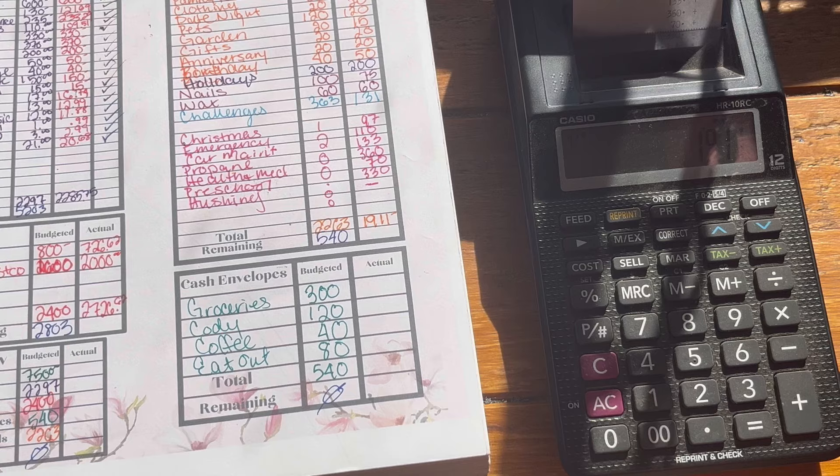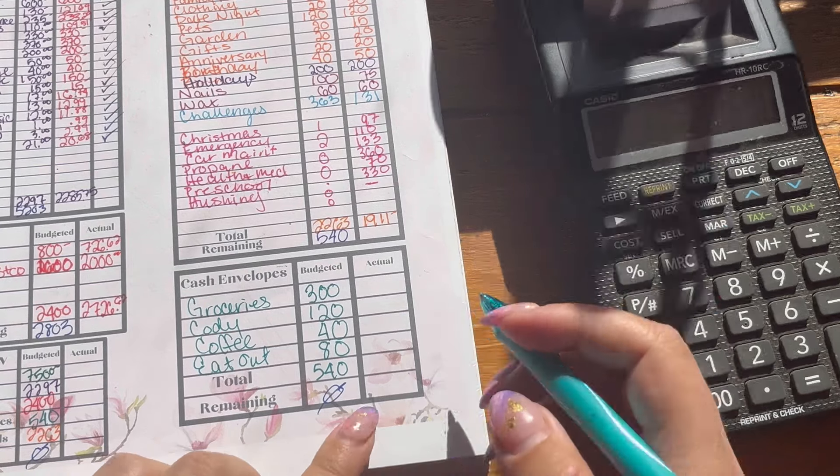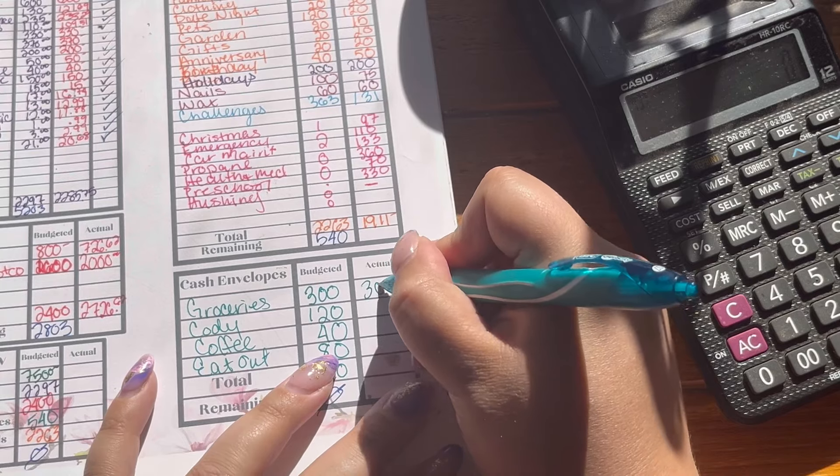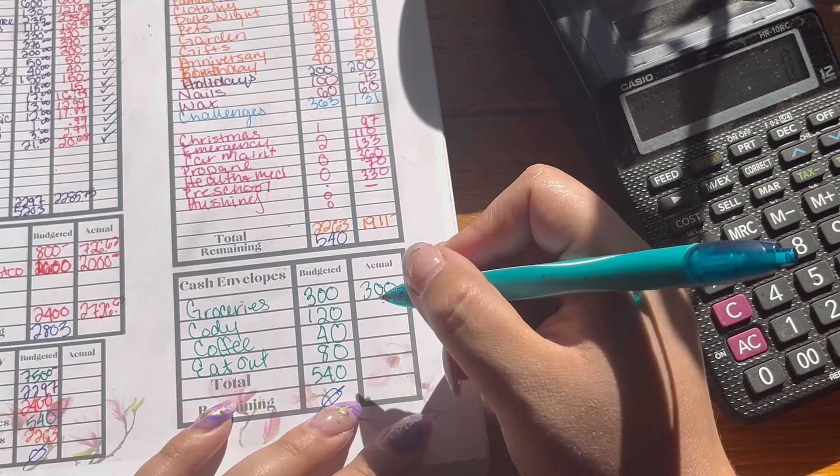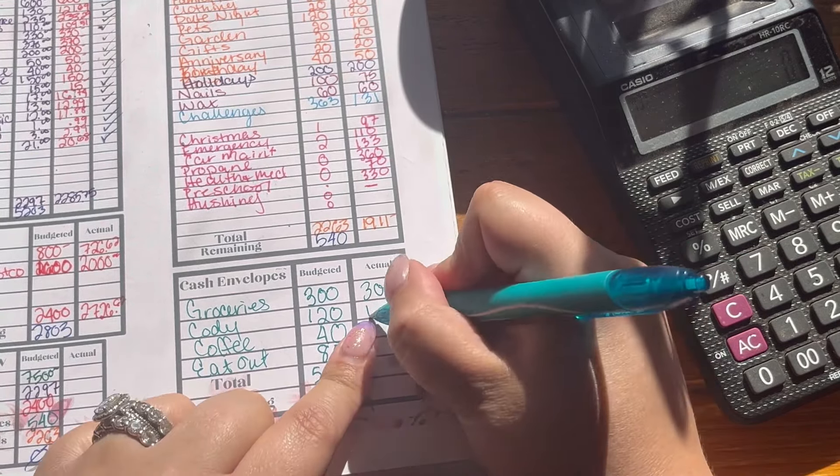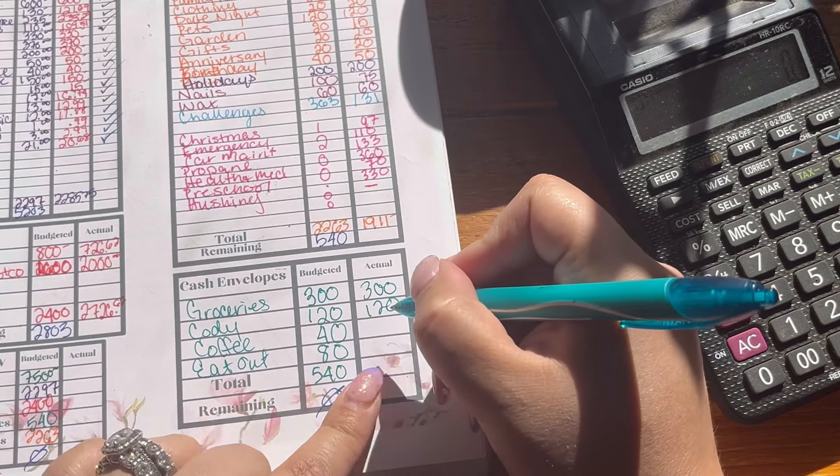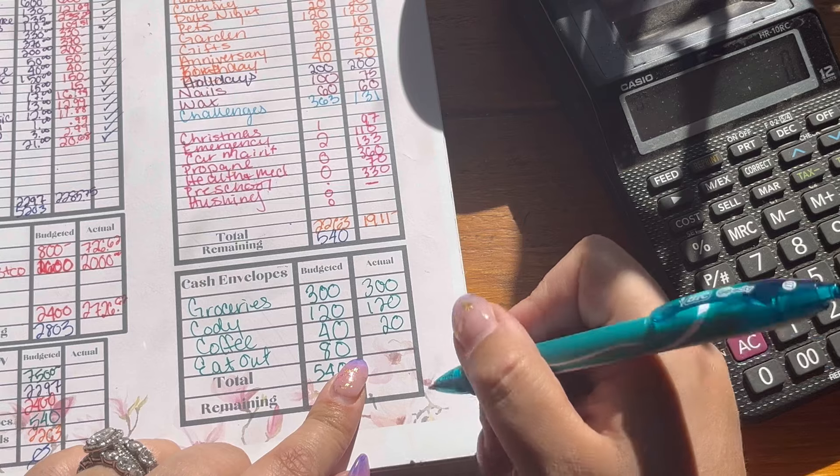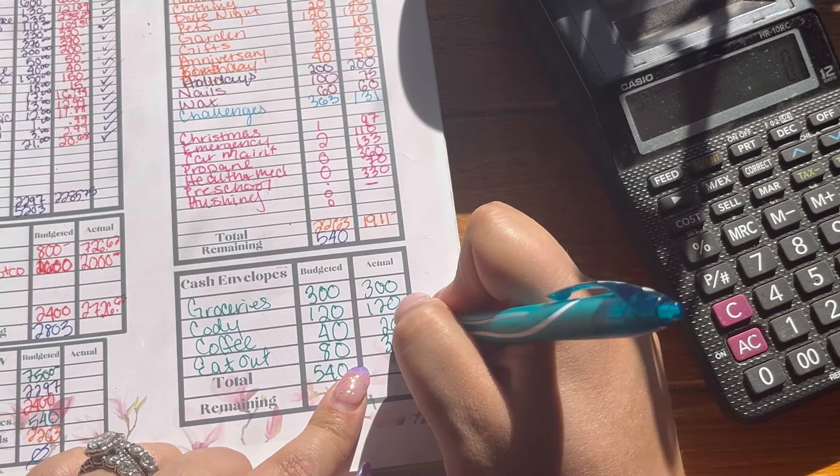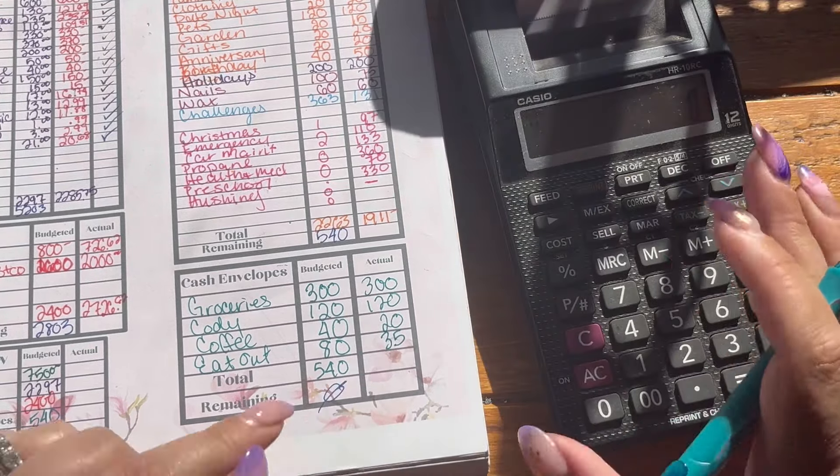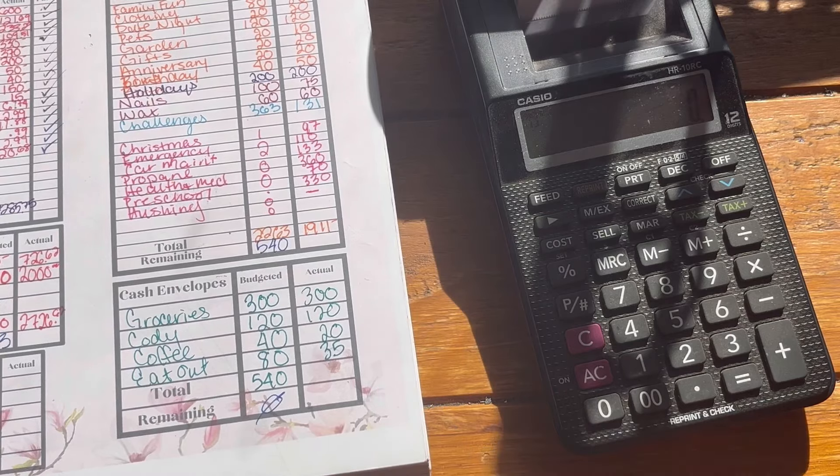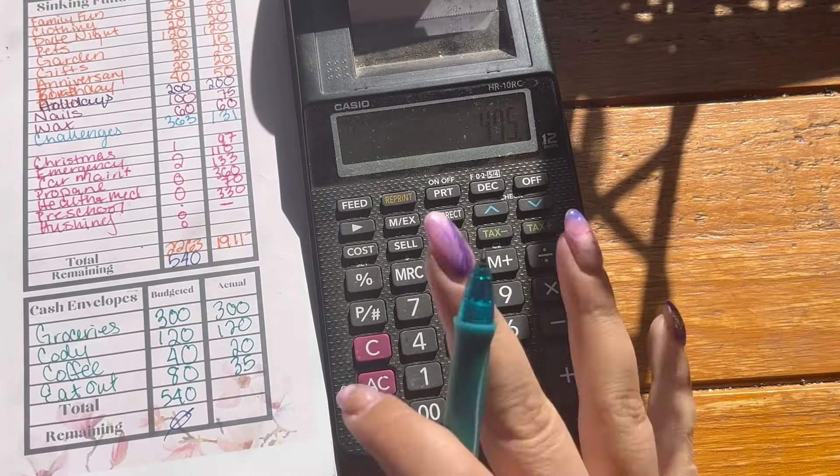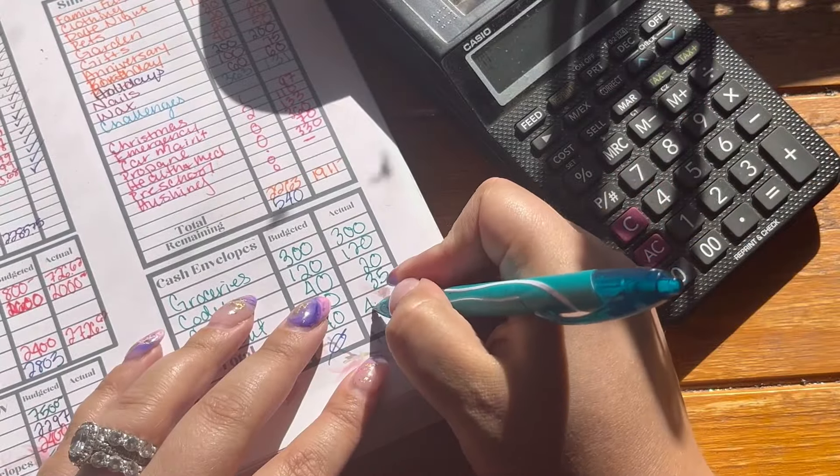All right, and then jumping down here to our cash envelopes. Groceries, we were right on budget with 300. We didn't have to go over that, though I think we spent almost all of that. Cody got his 120. Coffee money, I only did 20, so we were half of that. And eating out, we were a lot less. We did 35, because I was just on top of things. So, let's add that up. All right, 475, so good under budget here.